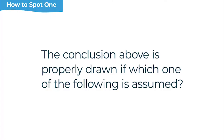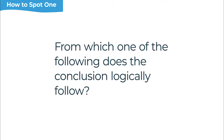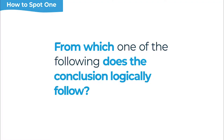Let's try another question stem: 'The conclusion above is properly drawn if which one of the following is assumed.' That word 'if' is hard to spot, but it tells us we're looking at a sufficient assumption question. Another example: 'From which one of the following does the conclusion logically follow?' We don't get typical language cues, but we are looking for an answer choice that will guarantee the conclusion logically follows. That's our task.